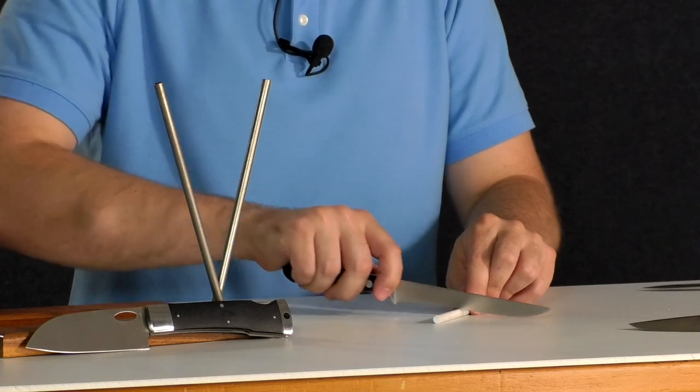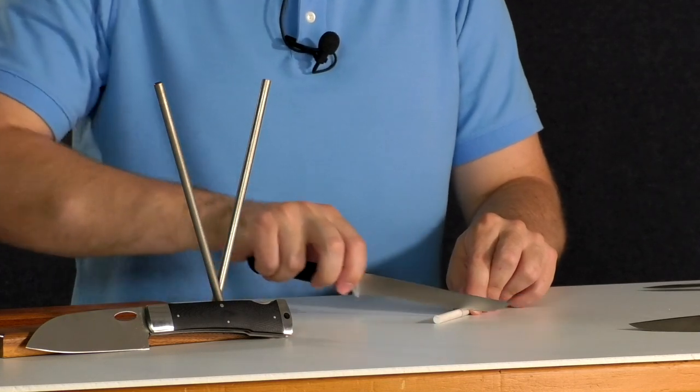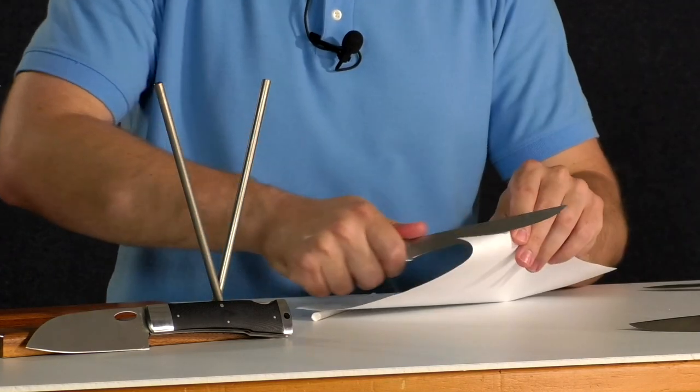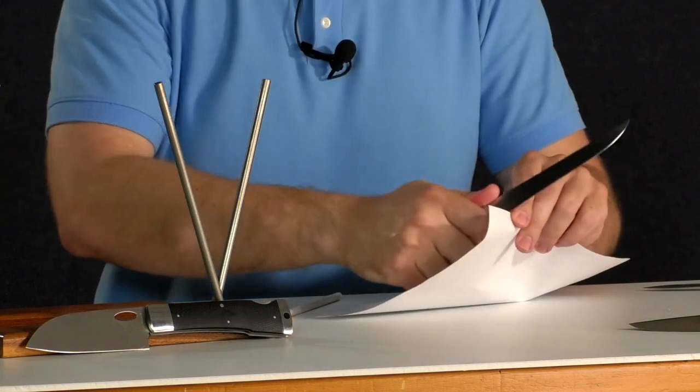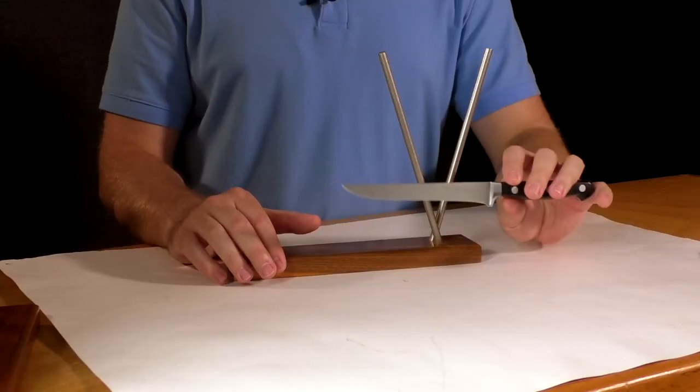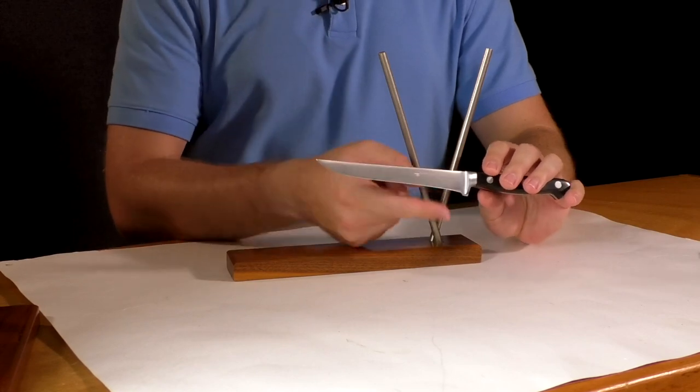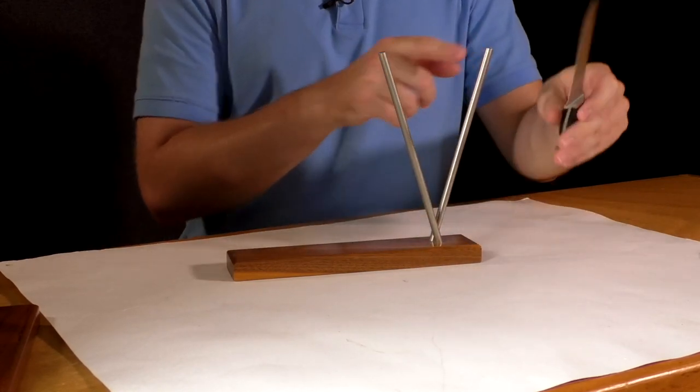So I'm going to crush this edge here on a sharpening stone, and it is incapable of cutting through the paper. So to get started, you take your knife, you take the heel of the knife, and you start at the top of the rod.